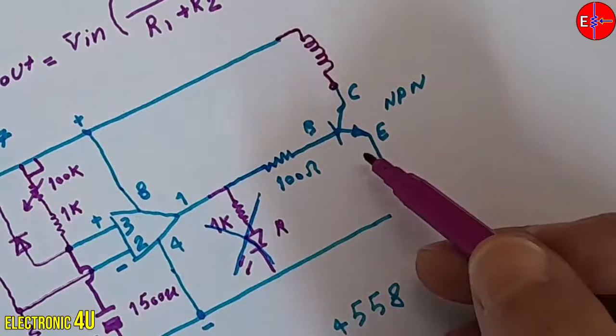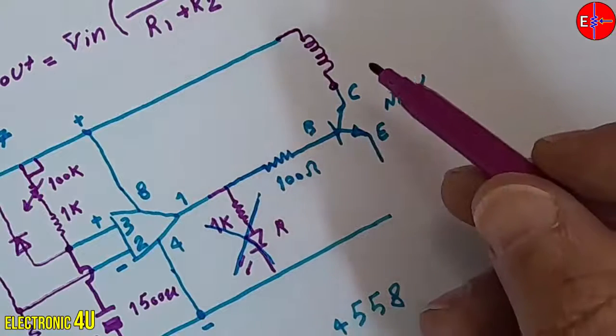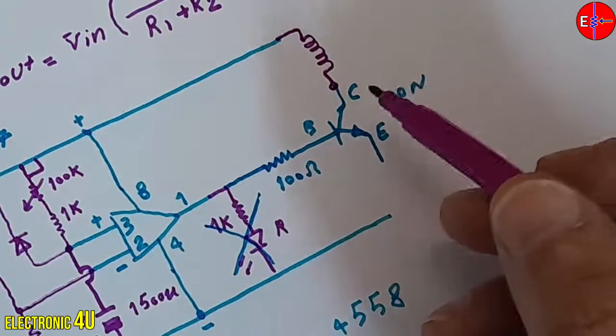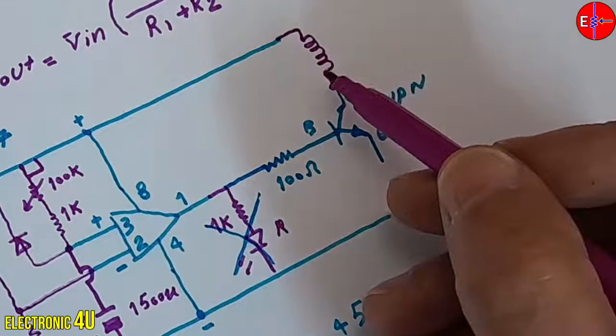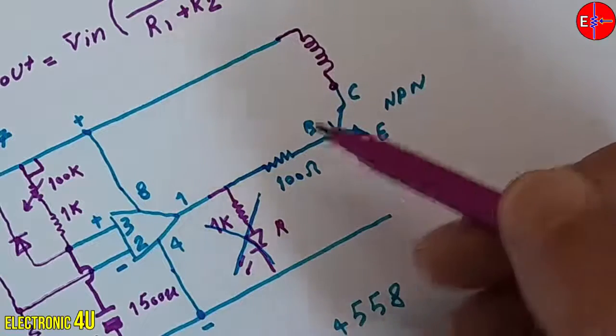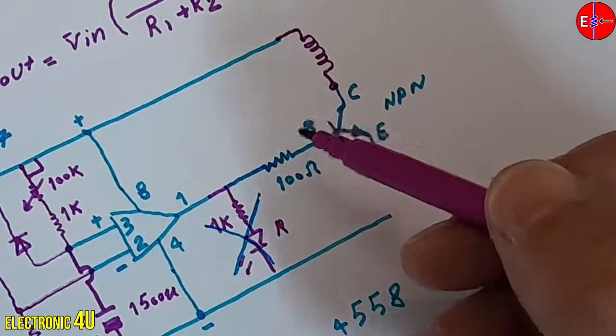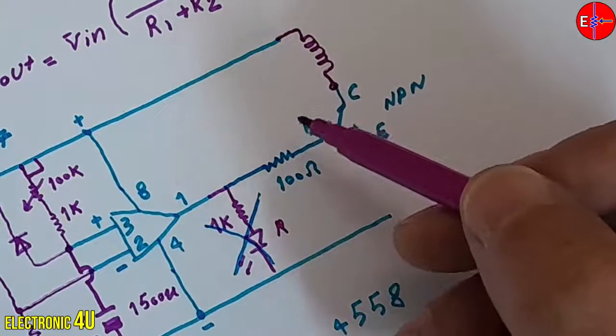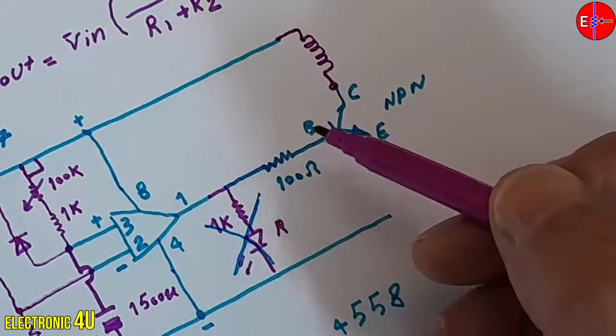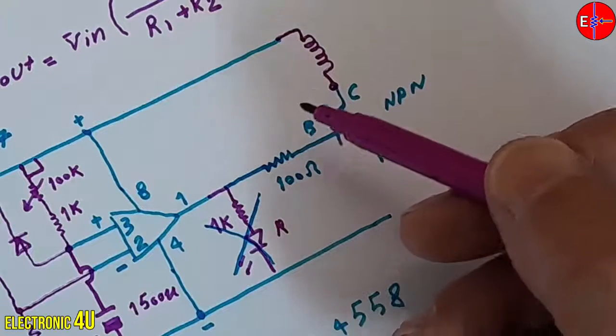To protect the transistor from high-voltage sparks generated during the relay coil's on and off, place a diode in reverse across the relay coil. In this circuit, since we don't have many on-off cycles, the presence of this diode is not crucial. We use a 1N4007 diode.